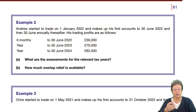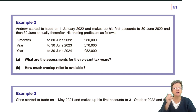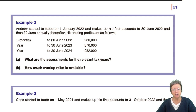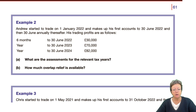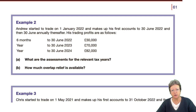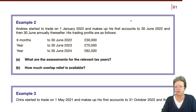These examples — three of them — are going to help us solidify those rules, because practising the rules makes it very much easier to understand. We're going to start with Andrew in example number two, who started to trade on the 1st of January 2022 and made up his first set of accounts to the 30th of June 2022. That is a short set of accounts.